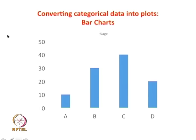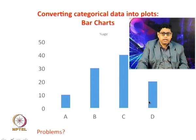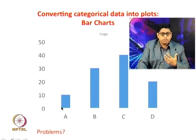You can express categorical data in another widely used format called a bar chart. You have the percentage on the y-axis and the categories A, B, C, D on the x-axis. One of the weaknesses of bar charts is that if you have too many bars it looks cluttered, but with few bars it is easy to represent. The same problem as pie charts applies: if you have a value of 2% and another of 40%, the 2% will look like 0 for all practical purposes.